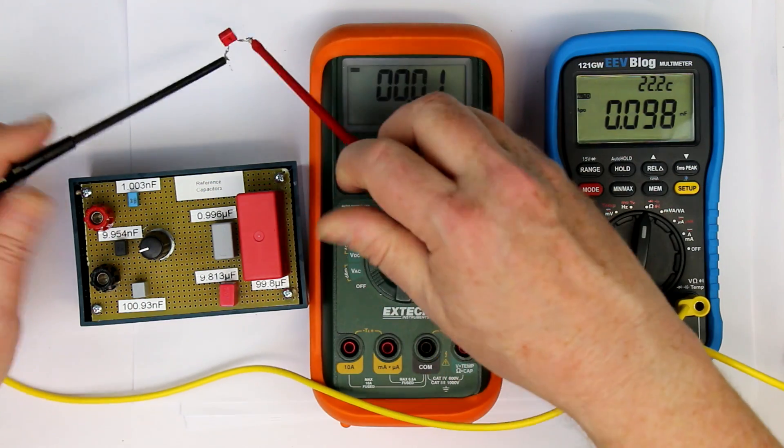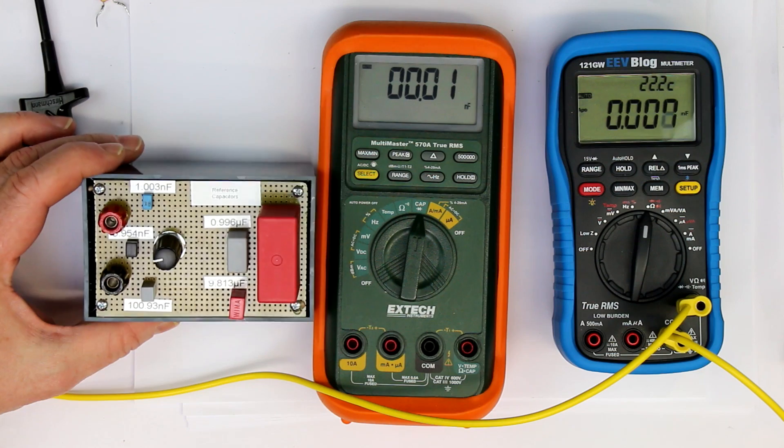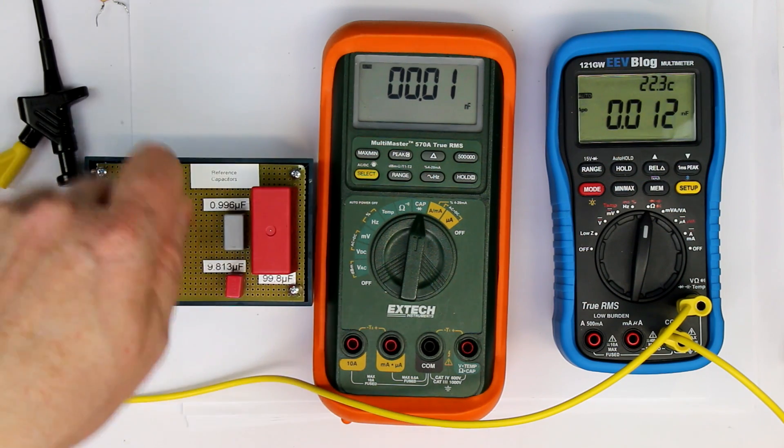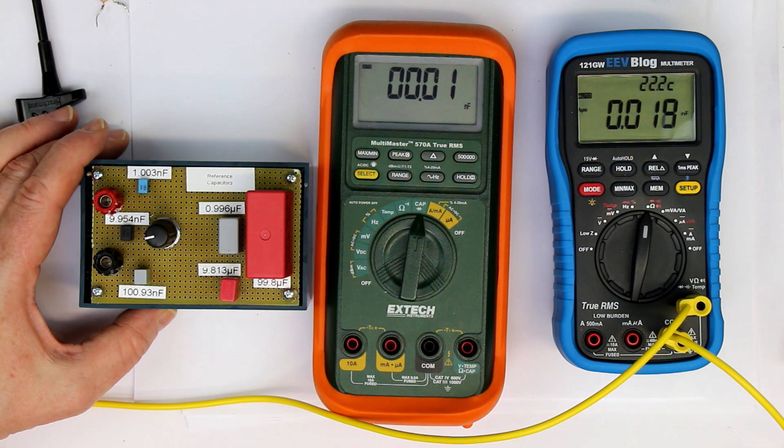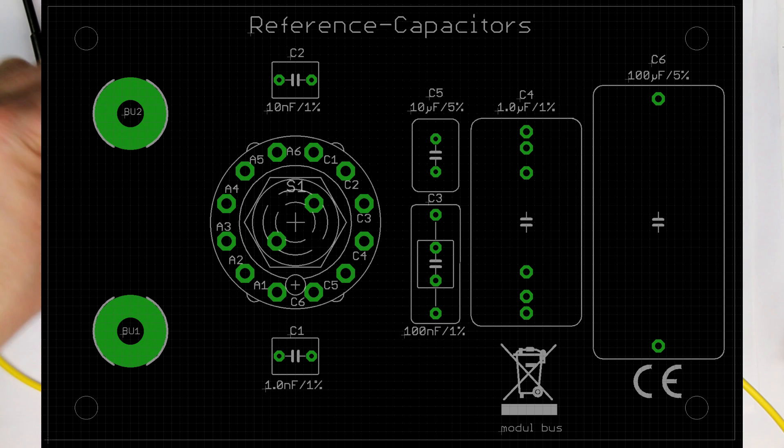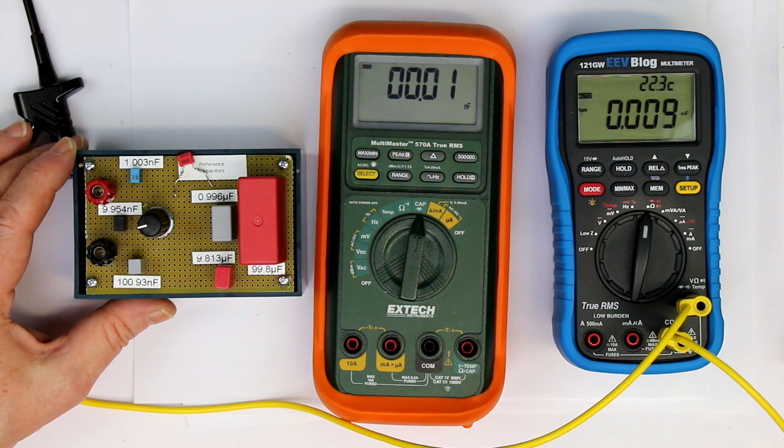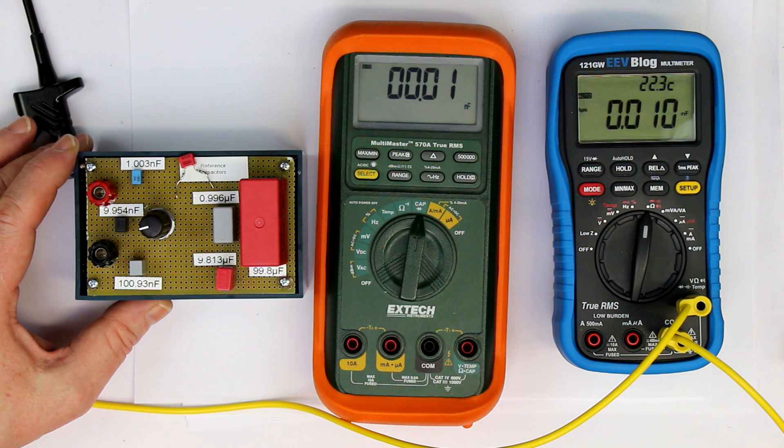So short demo took me about one or two hours to build this, including the drilling of the PCB and another hour to do the PCB layout. So tell me what you think of the idea to have a selection of seven reference capacitors in steps of 10 from 100 picofarad to 100 microfarad.